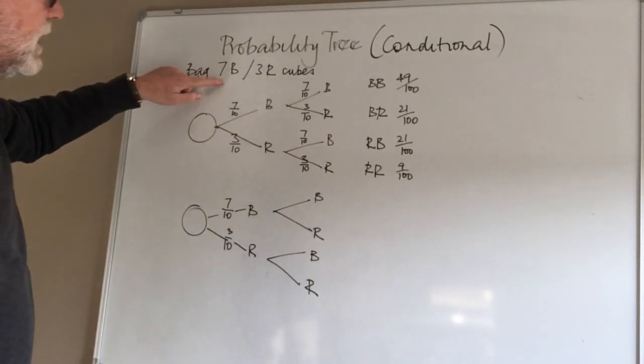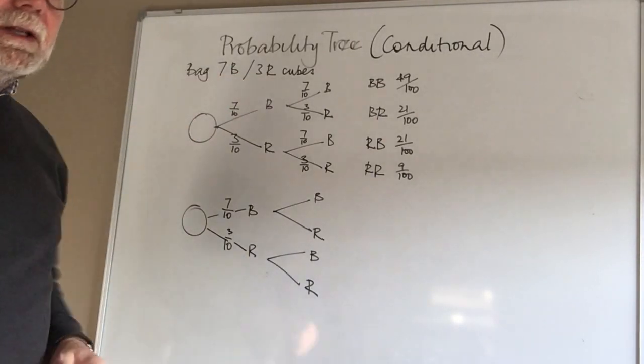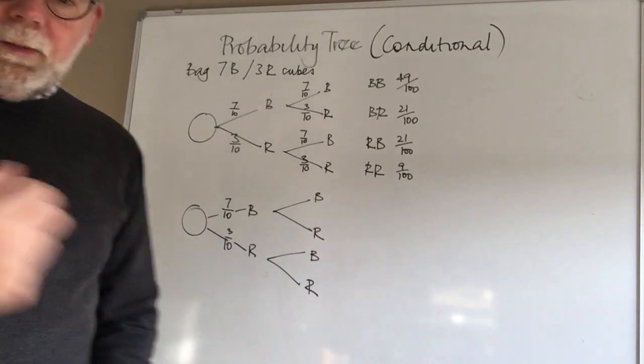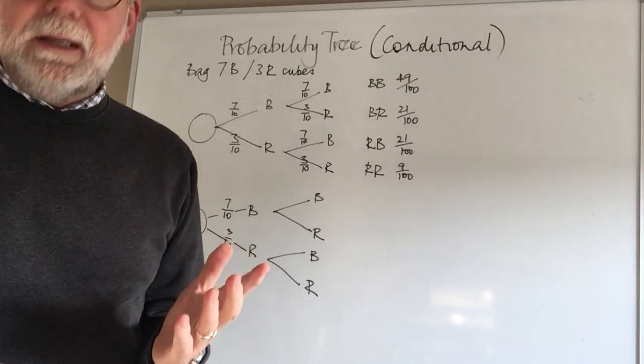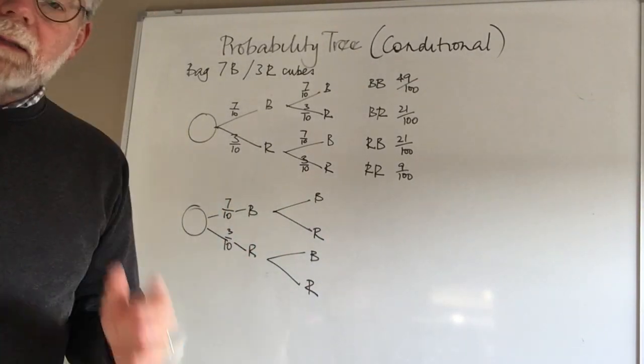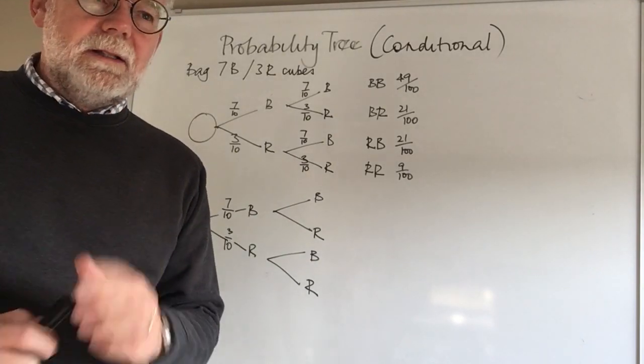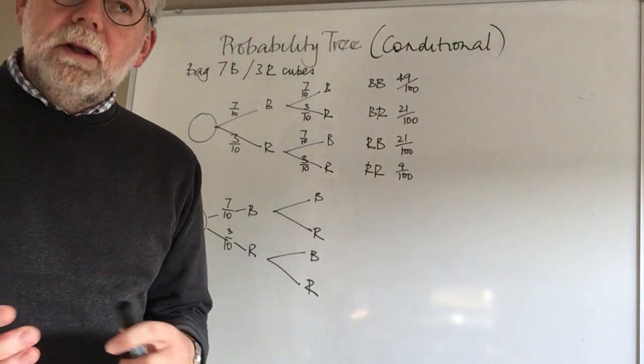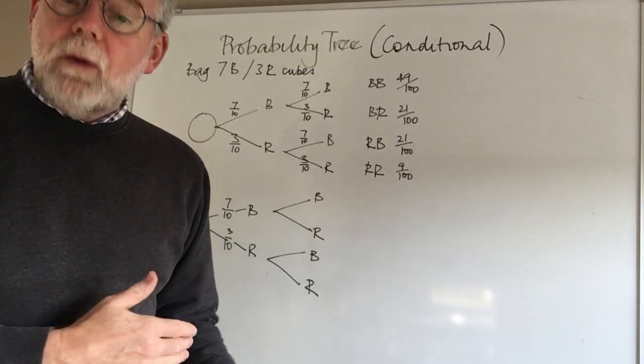So we have a bag with seven blue and three red cubes. A cube is taken out of the bag at random and set at one side. That's the sort of language, or you might see the phrase 'is not replaced.'